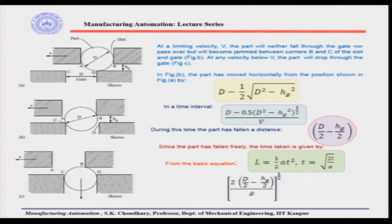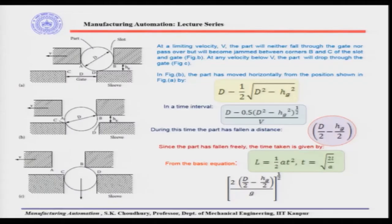At any velocity below the critical velocity V, the part will drop through the gate. If the velocity is very high, by inertia it will pass through the gate and will not fall. At a lower velocity it may clog between b and c. At a particular optimum velocity, the part will actually drop through the gate.